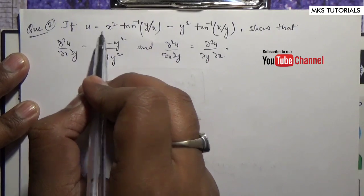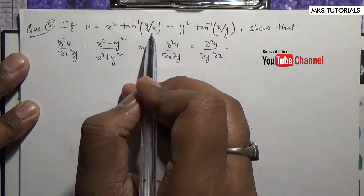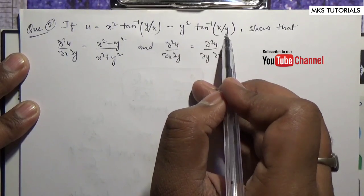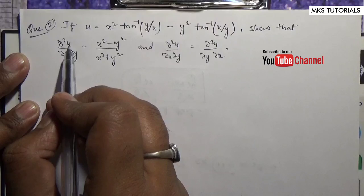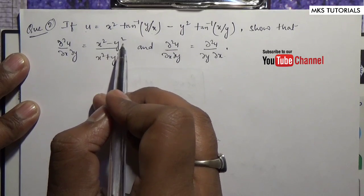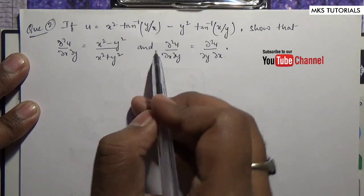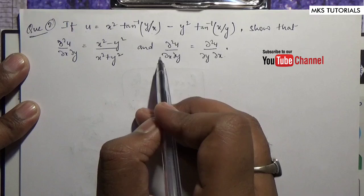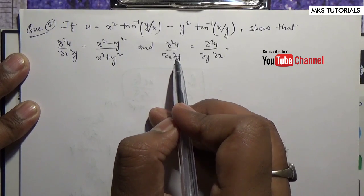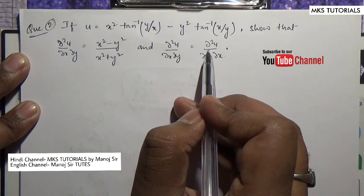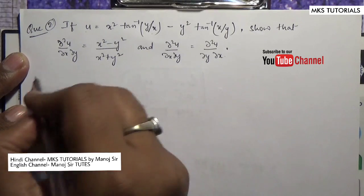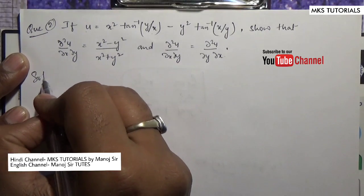If u equals x² tan⁻¹(y/x) minus y² tan⁻¹(x/y), we have to show that ∂²u/∂x∂y equals (x²-y²)/(x²+y²). One more thing I am going to prove is that ∂²u/∂x∂y is equal to ∂²u/∂y∂x.